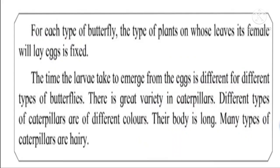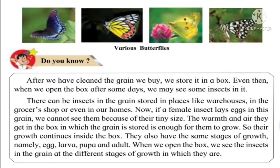The female plain tiger butterfly lays its eggs on a plant called milkweed, but all butterflies do not lay their eggs on the same plant — it differs from butterfly to butterfly. The time taken by the larva to grow into a butterfly also differs. The colors of butterflies also differ, some butterflies are large, and many types of caterpillars are hairy. You can see a variety of butterflies on the slide, all different in color and shape.